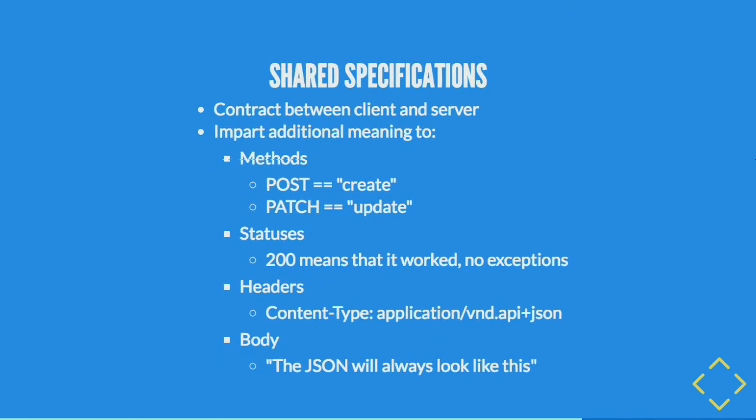So what allows clients and servers to cooperate? That's through specifications. Specifications impart meaning to a lower-level protocol — HTTP imparted meaning to TCP. It says if I send a packet of information with the word GET at the top, it means you're supposed to give me something. 200 statuses mean it worked. Headers describe the body.